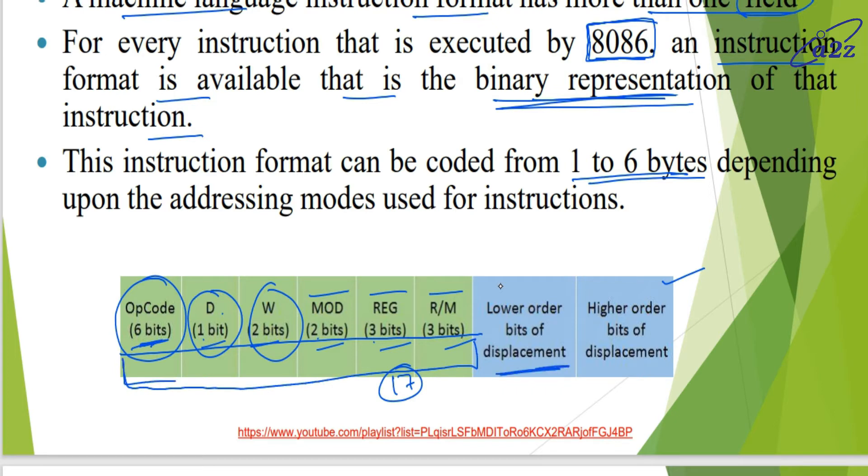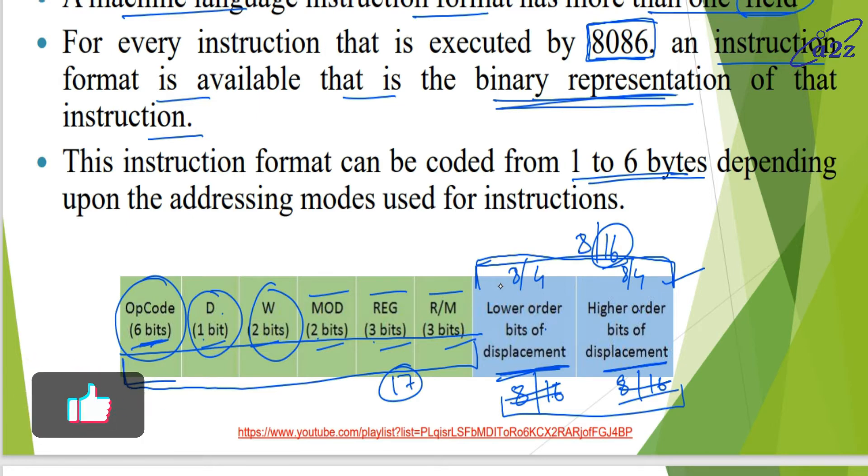Now here is the lower order displacement and higher order displacement. Displacement is the offset address. It can be of 8 bit or 16 bit. Total displacement is of 16 bit or 8 bit. In this case, 8 or 16 is the total. Either lower order is 4 or 8, and higher order is 4 or 8. Individual 8, 16 will not be there. This complete address will be 16 bit.